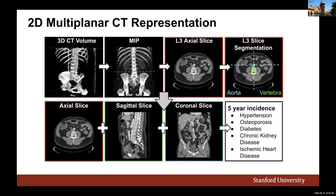Based on previous research, representing CT images as 2D projections decreases computational complexity and often outperforms using full 3D volumes. We also wanted to extract maximum information from these scans. We start with a 3D CT volume, compute a maximum intensity projection for the frontal view, then use a model to locate a specific spinal level — giving us an L3 axial slice, which has been shown to be predictive of several diseases.